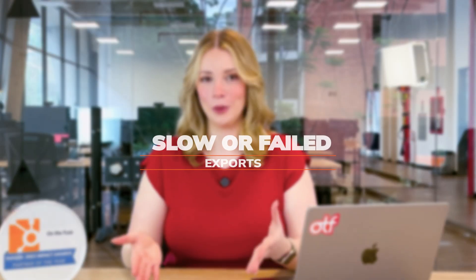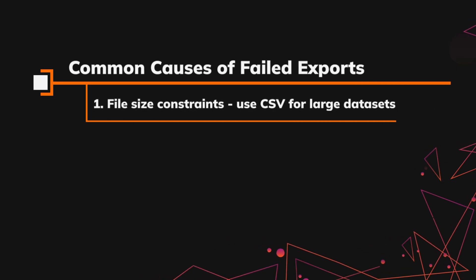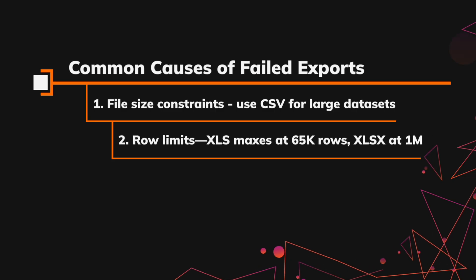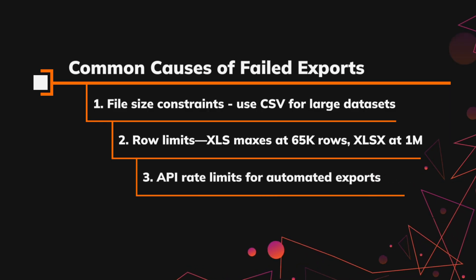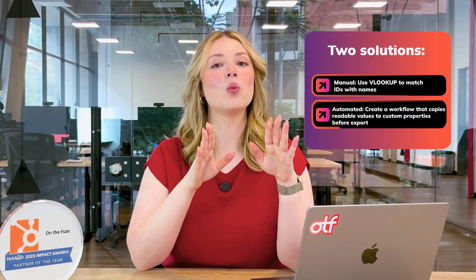Second: slow or failed exports. Large exports can take hours and may come as multiple files in a zip. Common causes are file size constraints — use CSV for large data sets. Row limits: XLS maxes at 65,000 rows, but XLSX at 1 million. API rate limits for automated exports. For massive data needs, invest in dedicated third-party integration tools. Third: numbers instead of names. Fields like deal owner show up as numbers — this isn't a bug, it's how HubSpot works internally. Two solutions: a manual solution using VLOOKUP to match IDs with names, or an automated solution where you create a workflow that copies readable values to custom properties before your export.